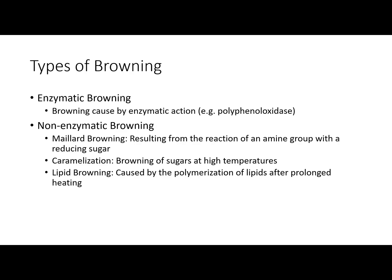There are two major types of browning that we study in food science: enzymatic browning and non-enzymatic browning. We've already looked at enzymatic browning this semester — that's generally the browning caused by enzymatic actions such as polyphenol oxidase, which we observed in our potato and apple lab. Now we're going to focus on non-enzymatic browning, which can be broken down into three different types.